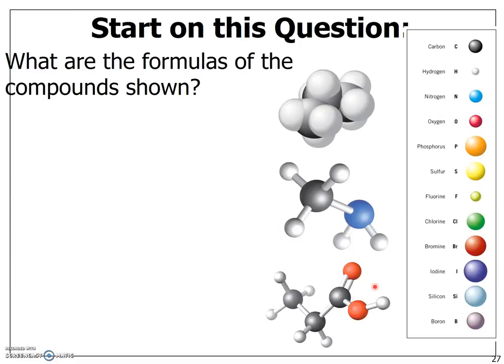So here's a potential clicker question for Wednesday. If given the molecular drawings and the key, can you tell me what is the chemical formula for each of these three compounds? Again, carbon is black, hydrogens are white, nitrogens are dark blue, and this would probably be closer to oxygen.